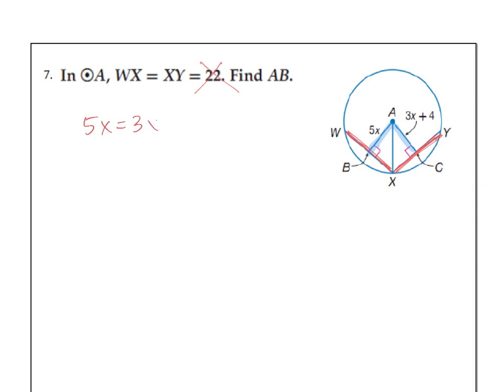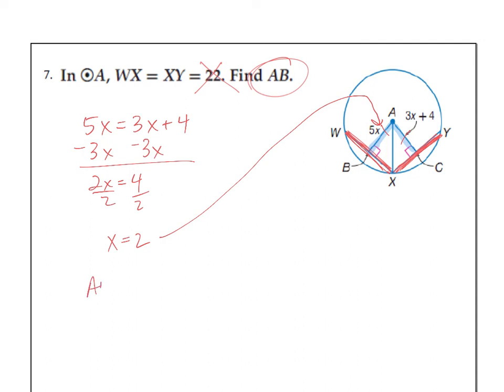So in this case, 5X equals the 3X plus 4. If these chords are the same, then these distances here and here are the same. So solve it using algebra. I think X turns out to be 2. But remember, we're looking for AB. So we're going to have to plug it back in right there. So the distance from A to B is 5 times 2, which is 10.